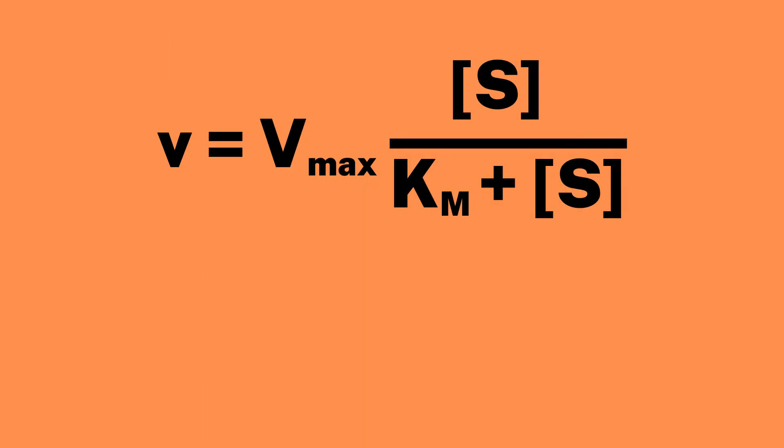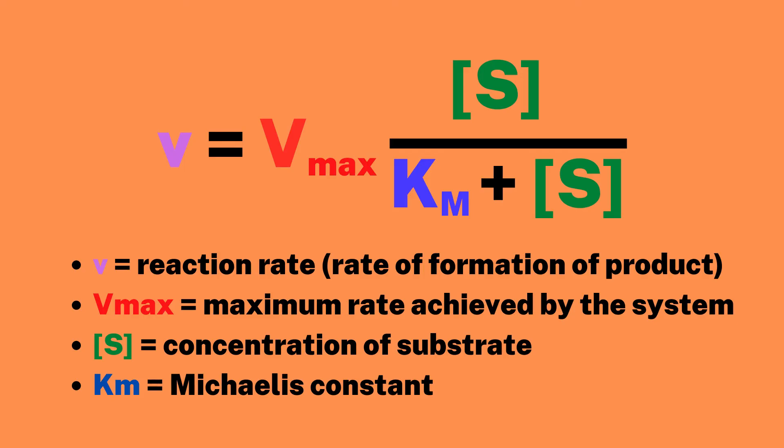First recall the Michaelis-Menten equation: v equals Vmax times [S] divided by Km plus [S], where v is the rate of the reaction, Vmax is the theoretical maximum possible rate of the reaction, [S] is the concentration of substrate, and Km is the Michaelis constant.